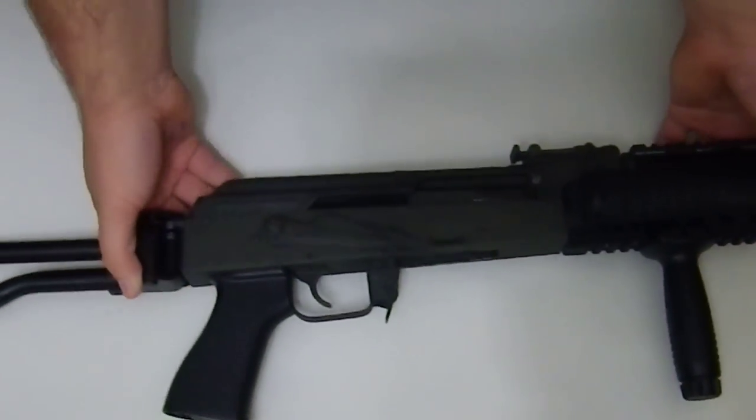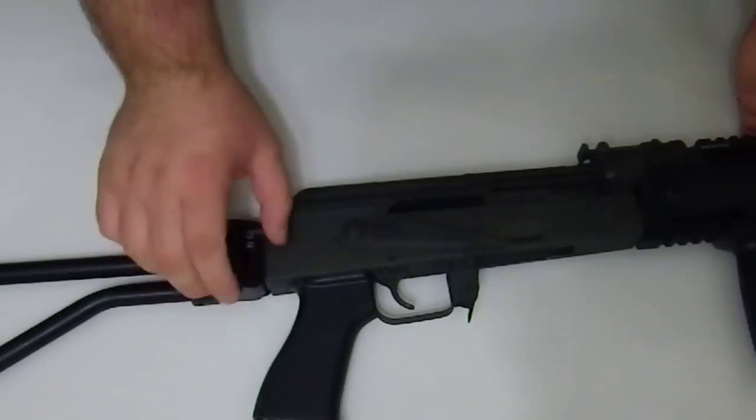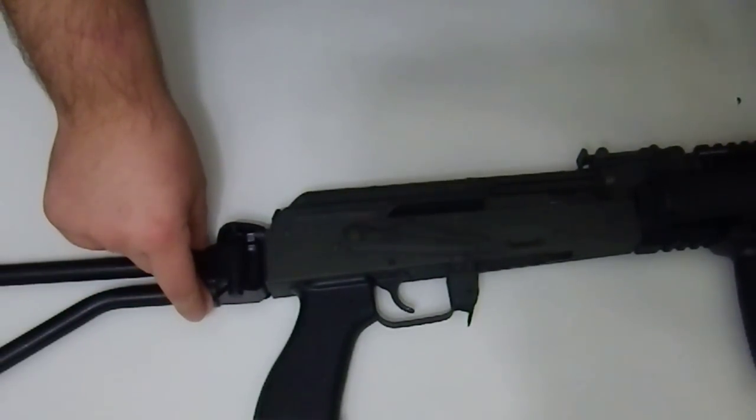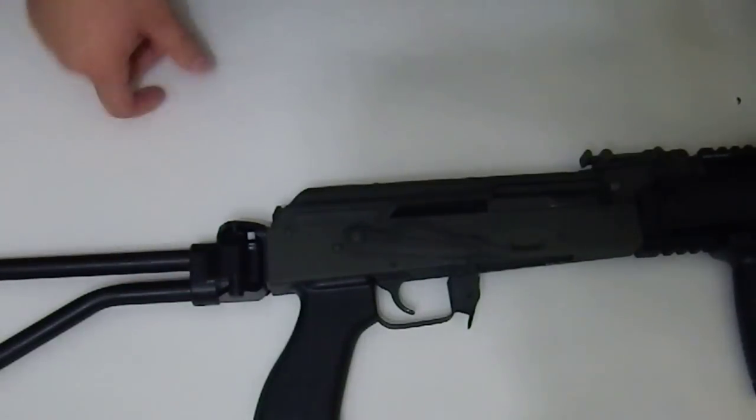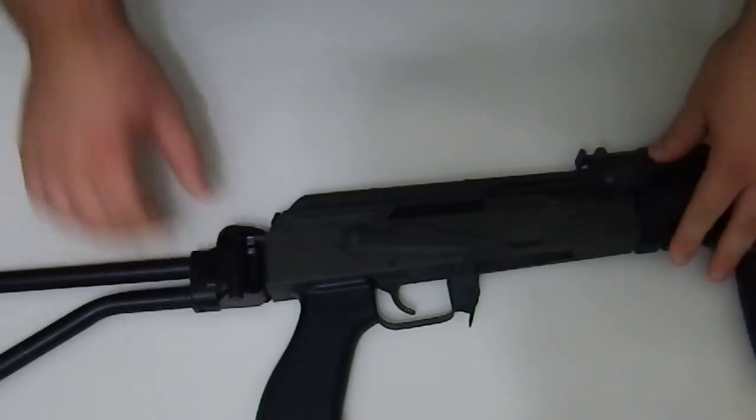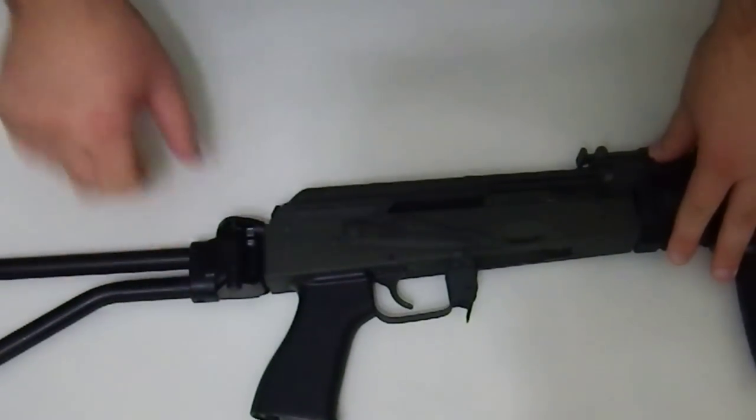The buffer tube version, if you're just buying the folding stock with just the buffer tube attachment, is only about, I think about a hundred bucks. I can't see the price off the top of my head, but it is a lot cheaper because you're not paying for the stock section. You're just paying for the locking mechanism or the folding mechanism.